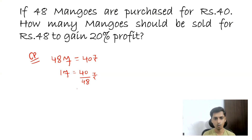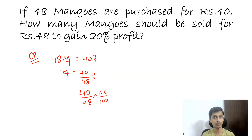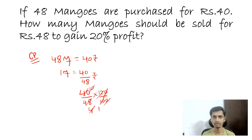So you have to sell one mango for 40 by 48 into 120 by 100. Canceling the terms: 40 divided by 48 into 120 by 100 simplifies — 4 times 10 is 40, cancel down to 10, then 10 over 10 gives 1. So you have to sell one mango for one rupee to get 20 percent profit.